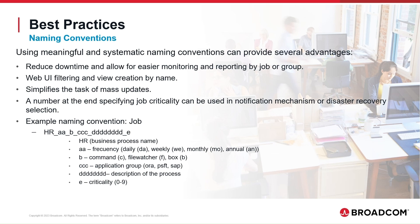This is an example of a naming convention for a job. Start with the acronym for the business process, for example HR, followed by the frequency — daily, weekly, etc. Then the job type: a command, file watcher, or a box. The application group: Oracle, PeopleSoft, SAP, etc. The process description, and a number for the job criticality.